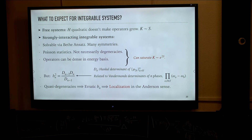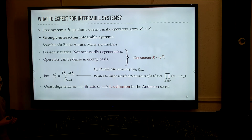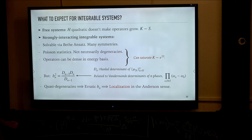The question now is what to expect in integrable systems — whether this is different from the behavior one would observe there, if we want to back up the claim that K-complexity is very sensitive to spectral statistics and chaoticity. We can make two discussions. We can start by considering free systems where H is quadratic in local operators, such as an SYK with two-site interactions instead of four-site interactions, or a set of fermionic oscillators.